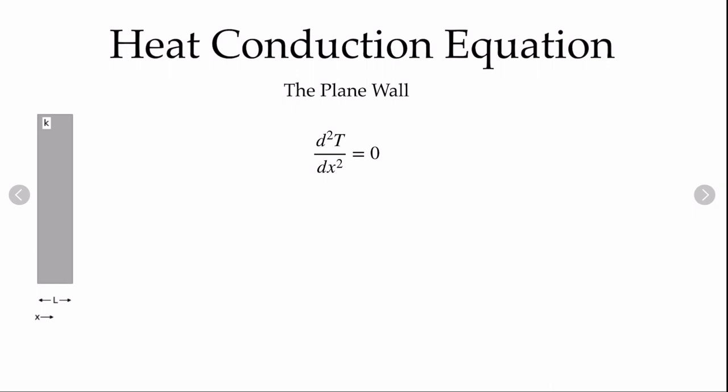The governing equation is very easy to solve — it's simply the second derivative of T equal to zero. Integrating twice gives the general solution that the temperature profile T(x) equals a constant C1 times x plus a second constant C2. To go further and solve this problem we require boundary conditions.